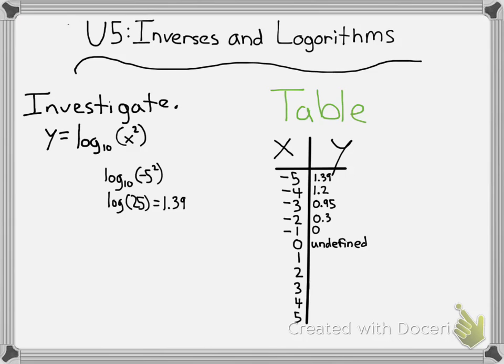And since I don't want to show you all those separately, I'll simply write the answers for them here. So once you plug all these into your calculator, you should get a number close to 1.2 for negative 4, a number close to 0.95 for negative 3, 0.3 for negative 2, 0 for negative 1, 0 for 1, 0.3 for 2, 0.95 for 3, 1.2 for 4, and 1.39 for 5. And you'll notice that 0 is undefined because you cannot take the log of 0 because that's just one of the things that you cannot do. It's like taking the square root of a negative number. It counts as undefined.